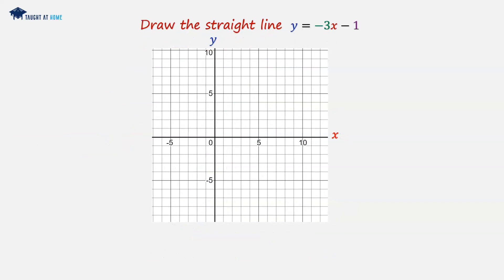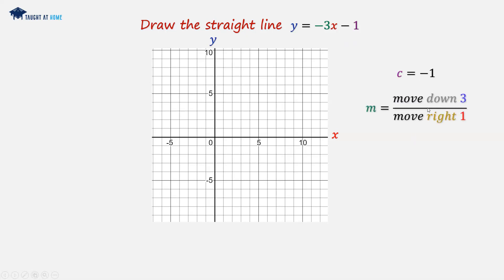Let's have another example of drawing straight lines that don't pass through the origin: y equals minus 3x minus 1. Here we've got a negative gradient this time. The c value would be minus 1, and the gradient m means we move down 3 and move to the right 1. We place our first point at minus 1, then move down 3 and to the right 1, repeating this. To go the other way, we move to the left 1 and move up 3. Then we can get a ruler and join these up.